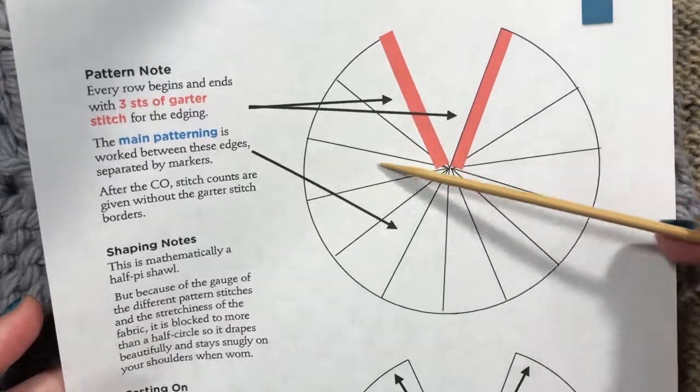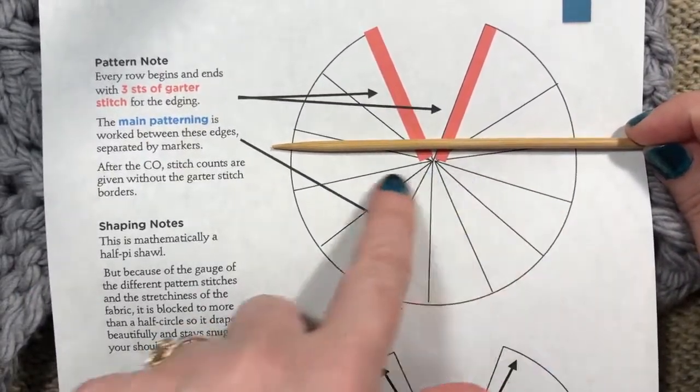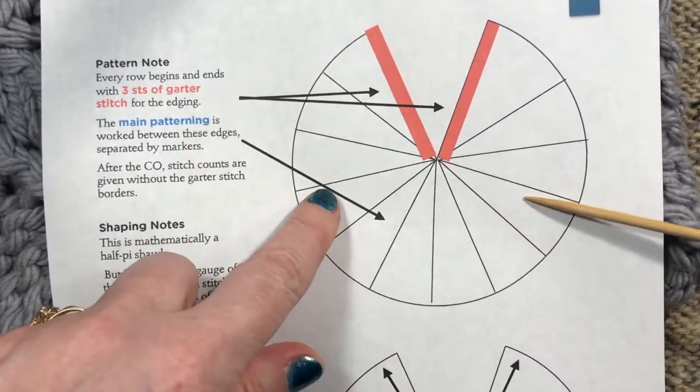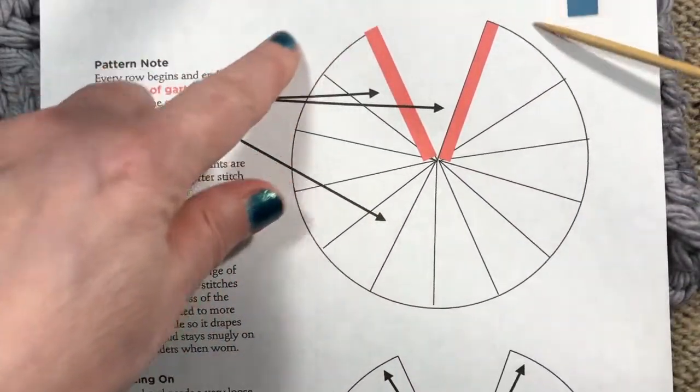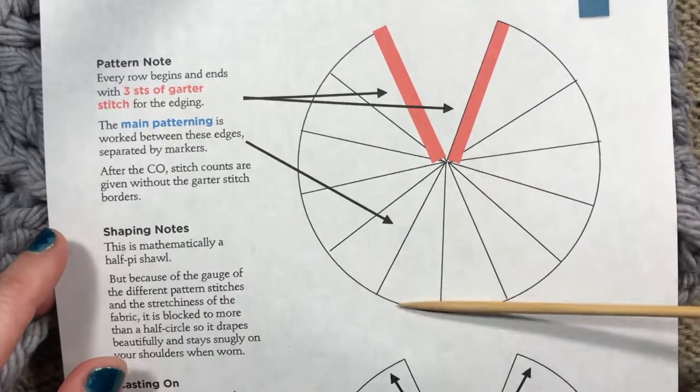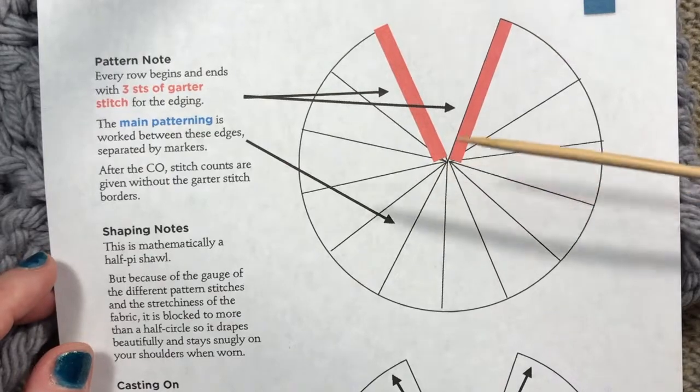Really, what we're doing is knitting a half pie, which technically would be a half circle. But because of the tension and different tension of the stitches in each section and the way we block it, we can block it to more than a half circle because the outside edge is really stretchy and it fits really well.